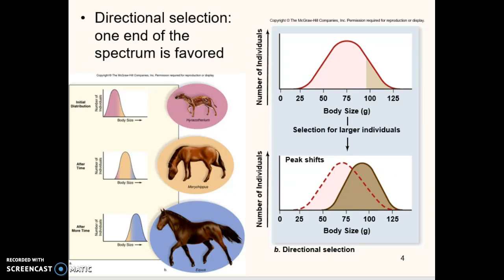Think about horses today — you can't really take them into a forest; they're not adaptable to that environment. Being big is perfect for running across the prairie and open grasslands. But put horses into jungles and forests, and being small is more adaptable. That's directional selection: one phenotype is favored.